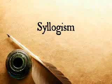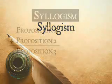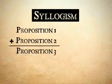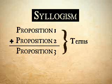A syllogism is a new argument that we conclude from truths that are already evident and known. It is a sentence made up of three propositions. The three propositions in a syllogism are called terms.